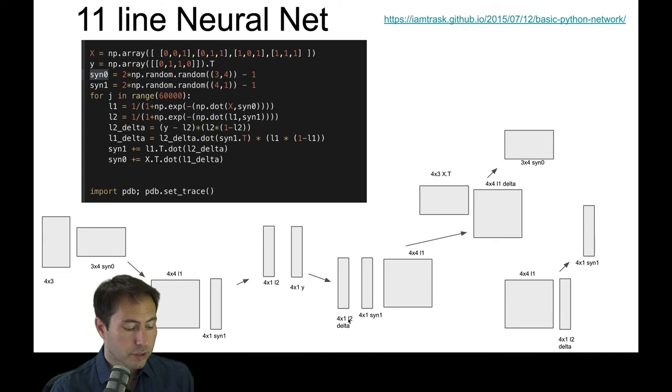This L2 delta, of course, will need to interact with the synapses 1, that is the synapses that we were working with here. And it will need to interact with our L1 layer, the first layer, all of which will compute an L1 delta. And we see L1 delta is a 4x4 matrix.